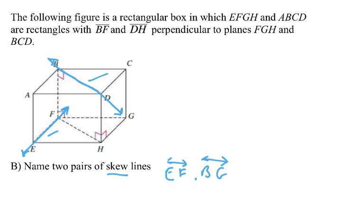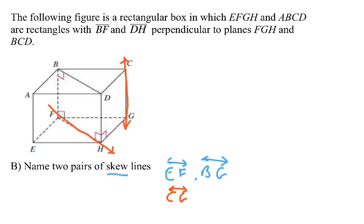Let's see if we can find another one. We just need two lines, not in the same plane, that never touch. Maybe we could use CG — this one going vertically — and FH going across the bottom. That would be another pair of skew lines: CG and FH.